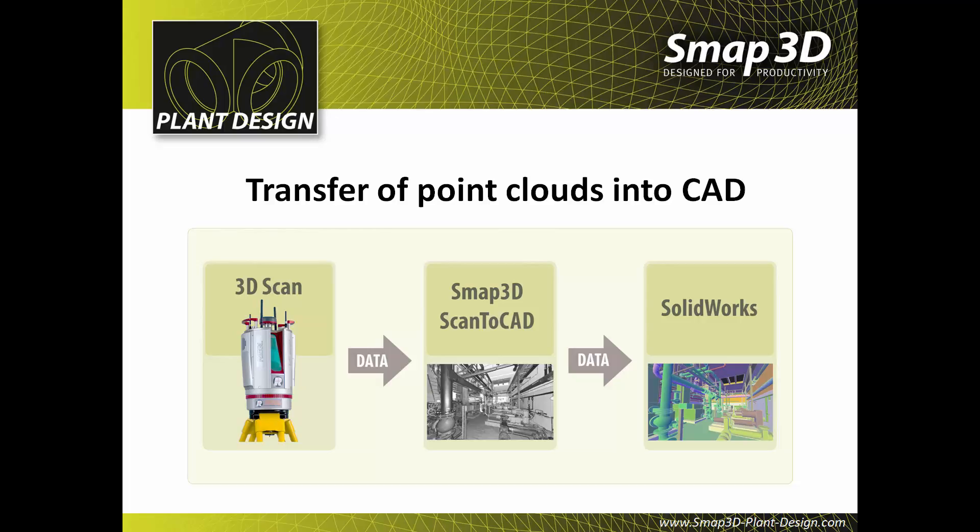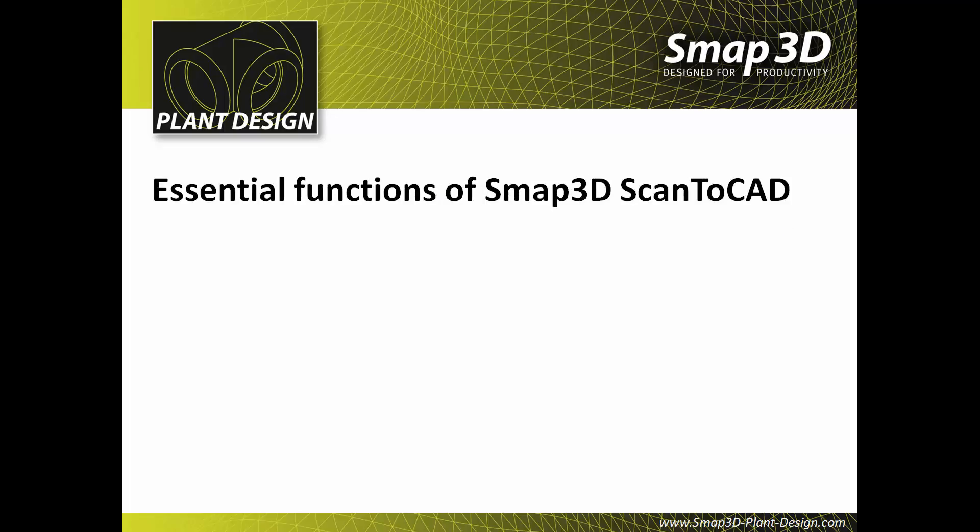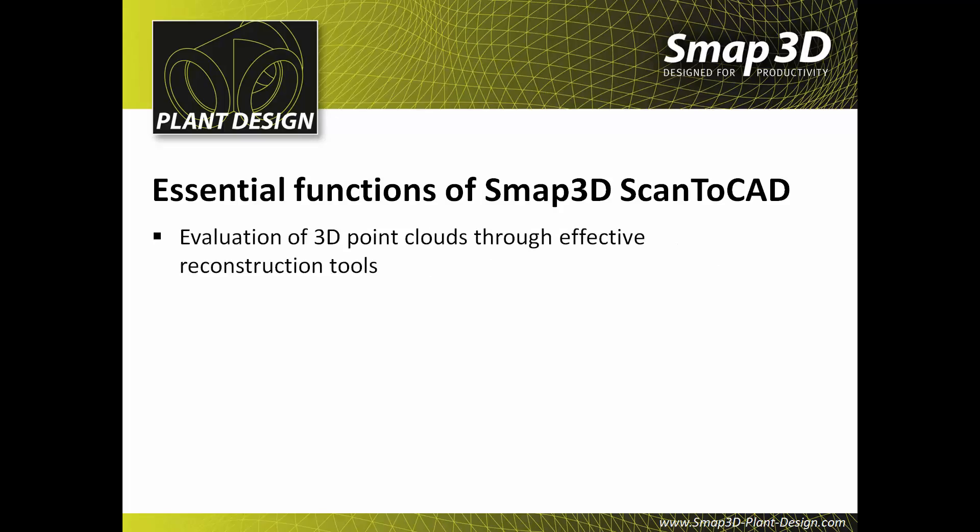Using a 3D laser scanner, a building or an object is scanned. The resulting point clouds are loaded into SMAP3D Scan2CAD. From there, selected geometries are reconstructed and exported to 3D CAD as feature-based geometries.